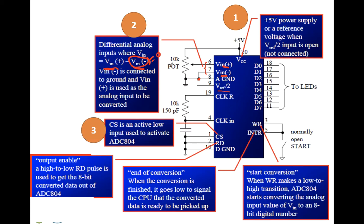Then you have the CS pin, which is an active low input used to activate the IC. Then you have the start conversion pin, WR. When WR makes a low to high transition, the ADC 804 starts converting the analog input value of Vin to an 8-bit digital number — that is the output.